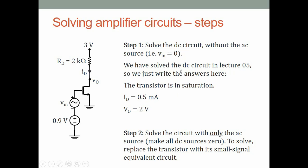For step one, we solve the DC circuit. This specific circuit was already solved in lecture five, so the answers are: DC drain current I_D = 0.5 milliamps, and DC drain voltage V_D = 2 volts.